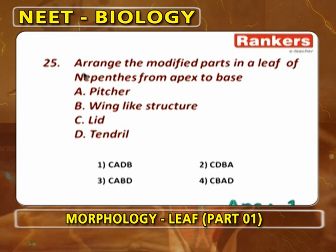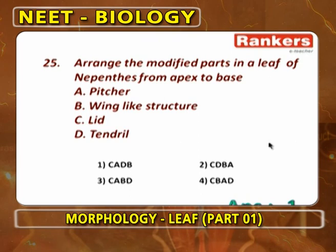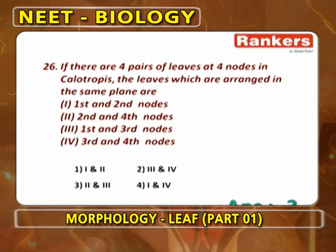Arrange modified parts of Nepenthes leaf from base to apex. The wing-like phyllode structure is at the base, so the answer is CADB.